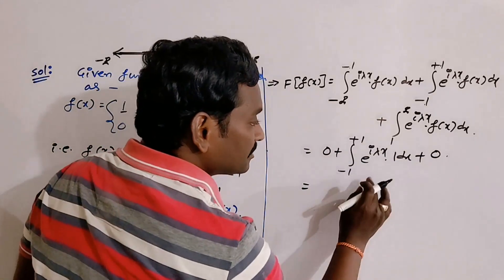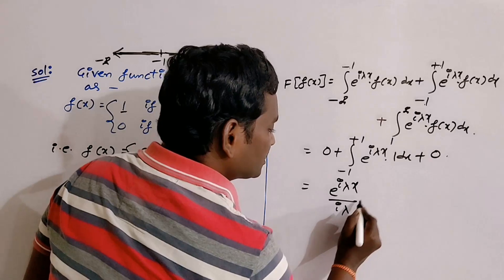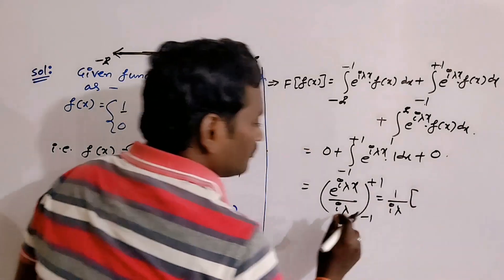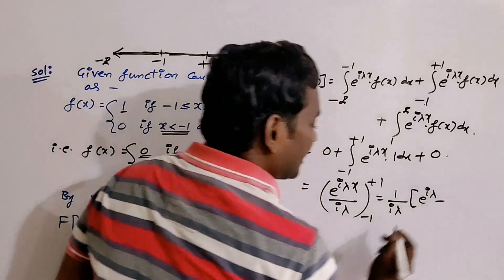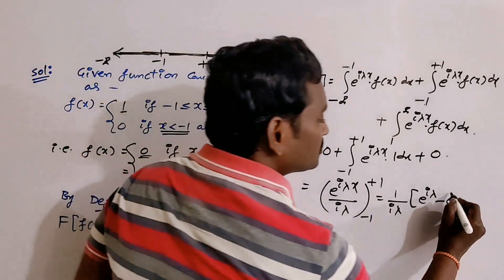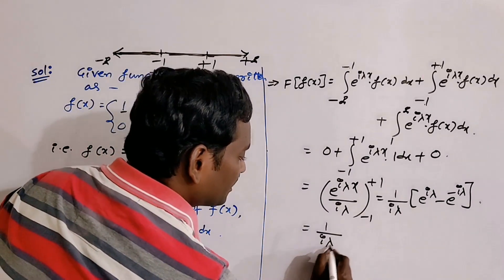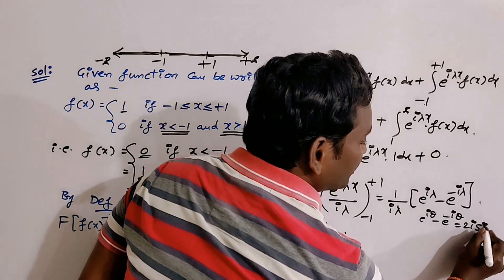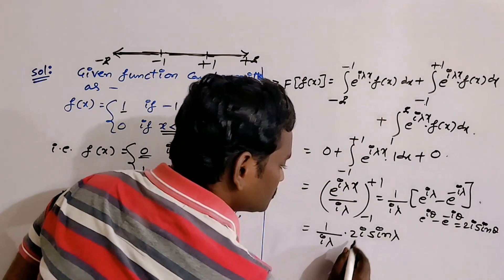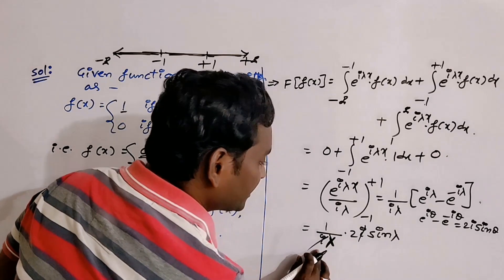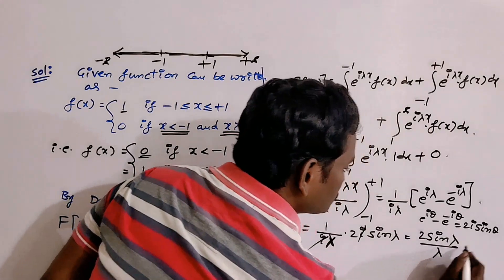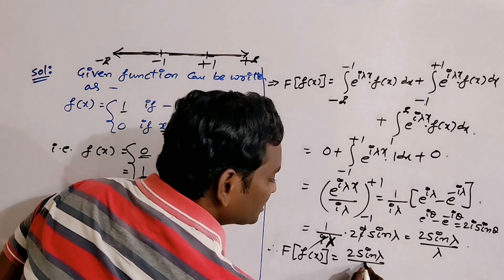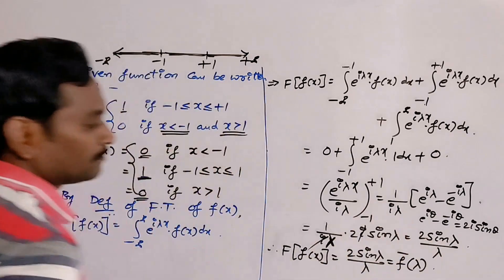The remaining integral is ∫₋₁^{+1} e^(iλx) dx = [e^(iλx)/(iλ)] from −1 to +1. Applying the limits: (1/iλ)[e^(iλ) − e^(−iλ)]. Using Euler's theorem, e^(iθ) − e^(−iθ) = 2i·sinθ, this becomes (1/iλ)·2i·sinλ. The i's cancel, giving F̄(λ) = 2sinλ/λ. This is the Fourier transform of the given function.